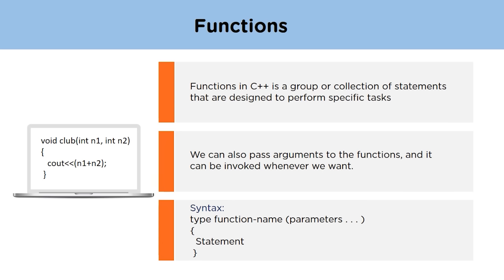Now moving on to functions — functions in C++ are groups of statements designed to perform a specific task. They allow us to write code inside the function and then use that code every time we need it by simply calling the function. We can also pass arguments to the function. The syntax of a function is: type, function name, and then parameters inside brackets. We can invoke the function by calling it from the main function.